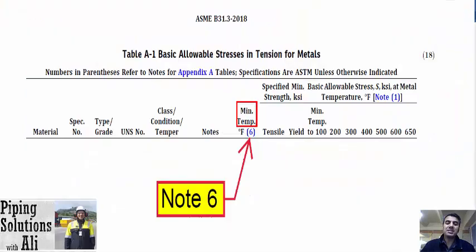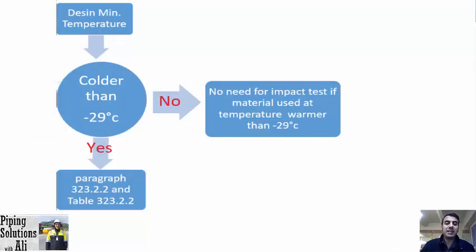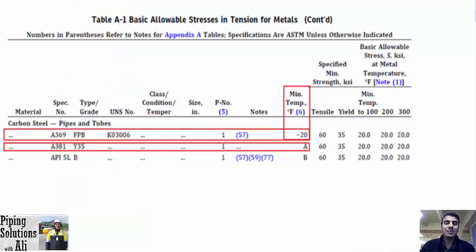I'm going to explain Note 6 of Table A1 of ASME B31.3. It means that the minimum temperature in Table A1 refers to design minimum temperature. It says that we can use all materials at the design minimum temperature or warmer than the minimum temperature with no additional requirements — such as impact testing — if the design minimum temperature is minus 29 degrees Celsius or warmer. When design minimum temperature is lower than minus 29 degrees Celsius, we shall follow requirements specified in paragraph 323.2.2 and Table 323.2.2. You can find two methods used for specifying minimum temperature in Table A1.